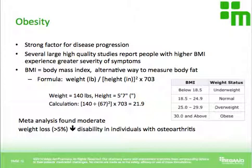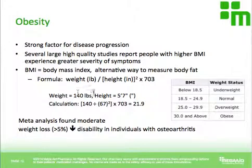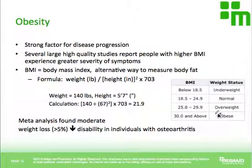How do you actually define somebody who is medically obese? We do that by using a variable known as BMI, or body mass index — basically an alternative way to measure body fat. Using the formula with pounds and inches, if you calculate BMI for somebody who weighs 140 pounds and is 5'7", their BMI would be about 22, which would be considered normal. Somebody who is obese is somebody with a BMI greater than 30.